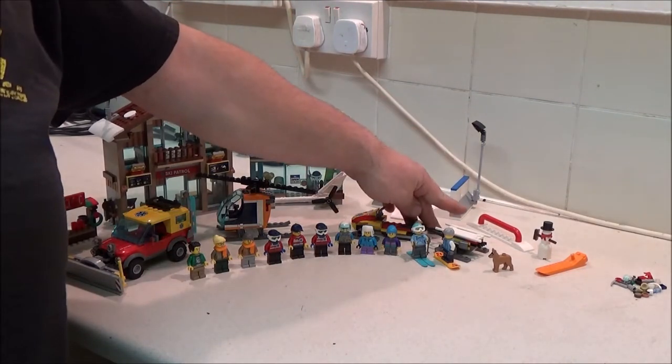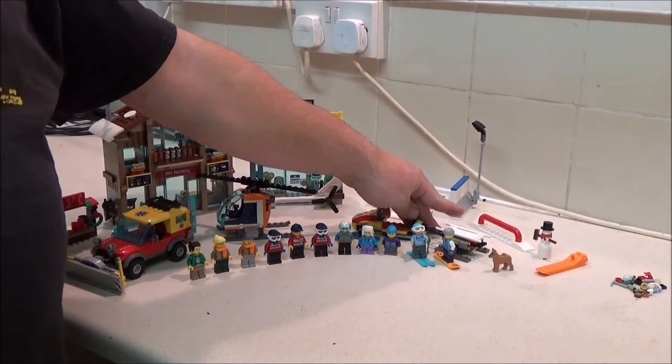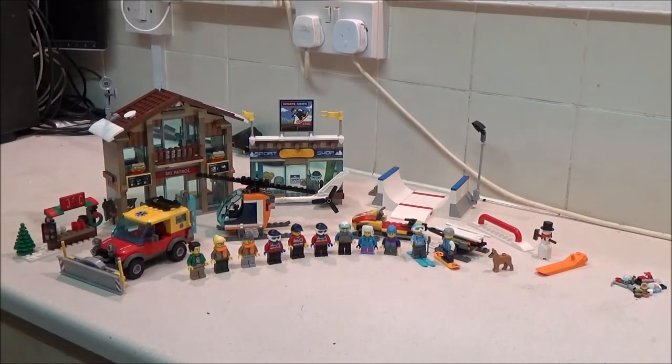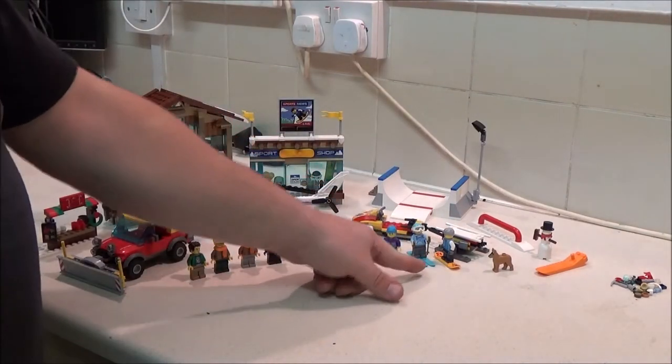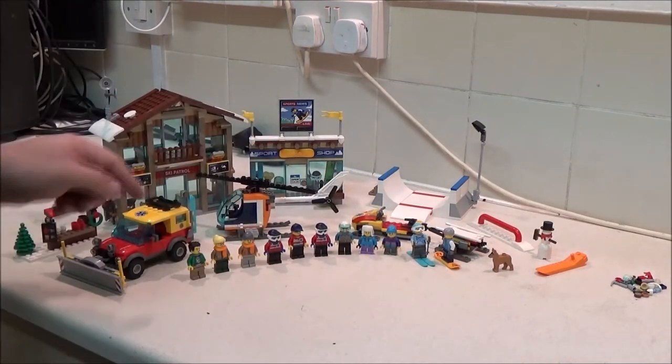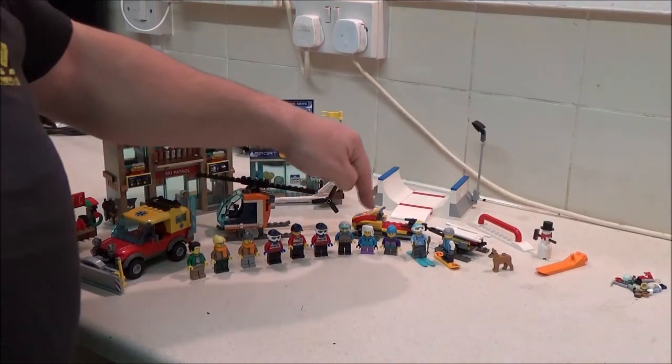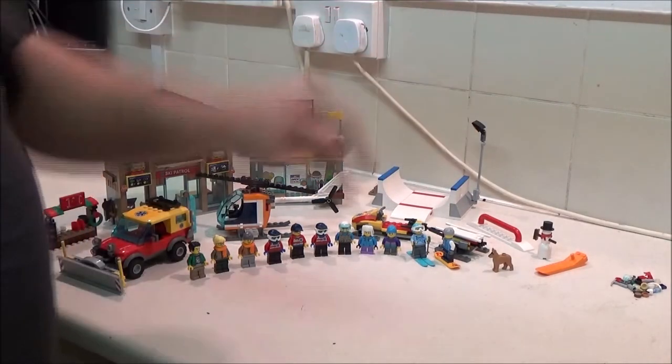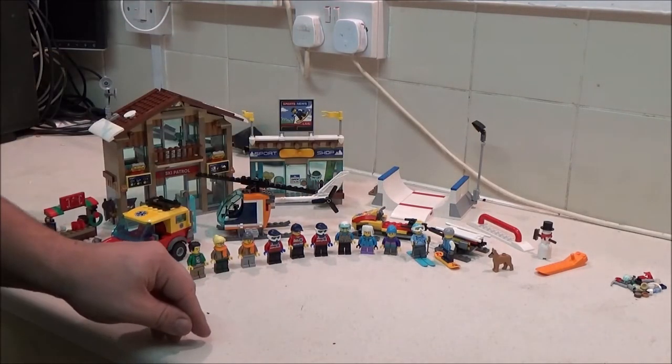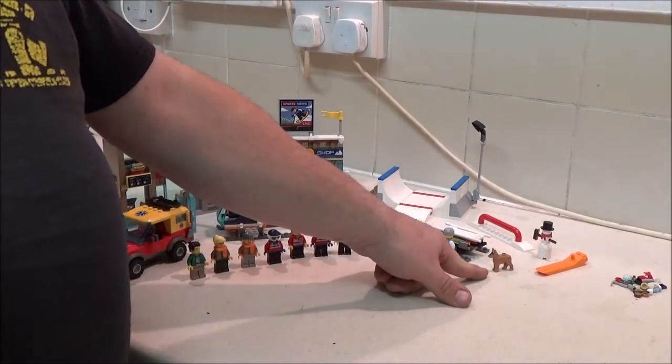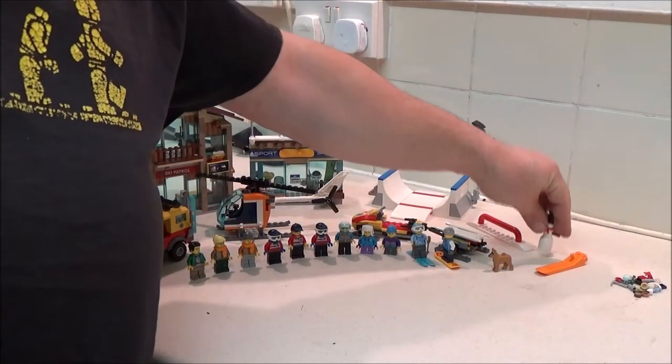It's got a half pipe and it's got, I can't remember what skaters call that, it's like a grinding bar thing. We've got snowboarder, we've got someone with a set of skis, we've got a little doggy and we have one, two, three, four, five, six, seven, eight, nine, ten, eleven figures. Twelve if we count the dog and thirteen if we count the snowman.